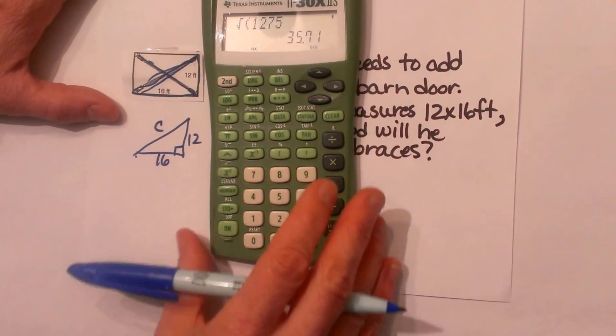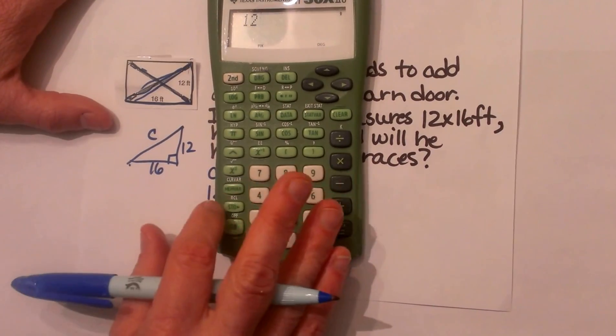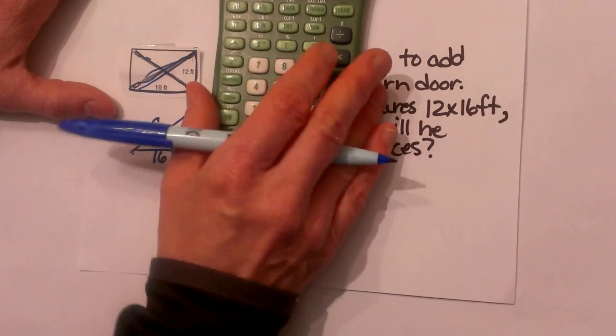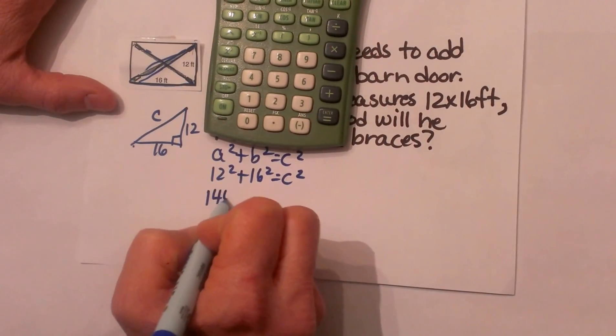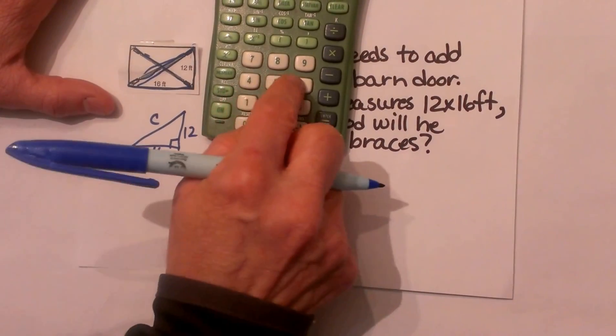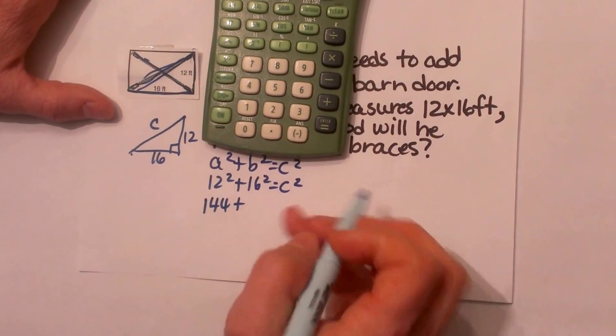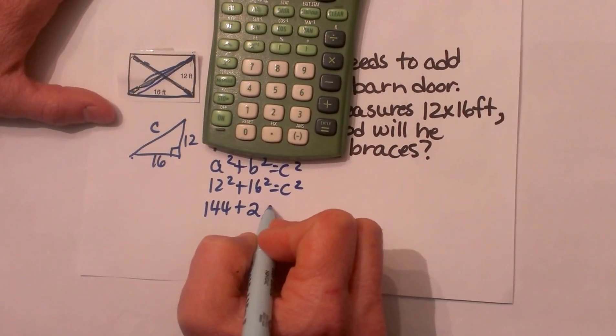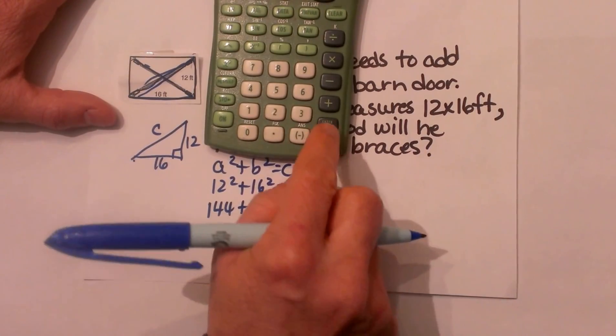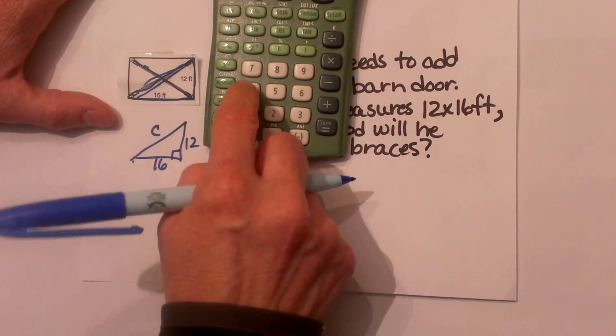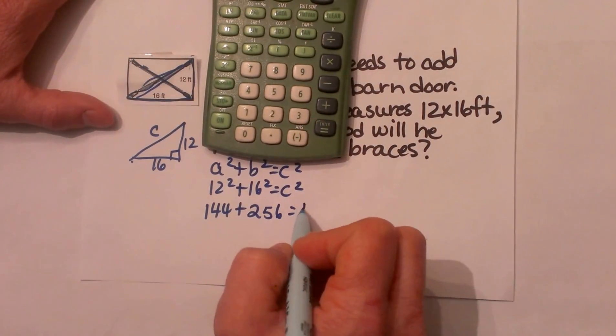So now let us grab our calculators. 12² which is 144 plus 16² which is 256, and I am going to add those together and I get 400.